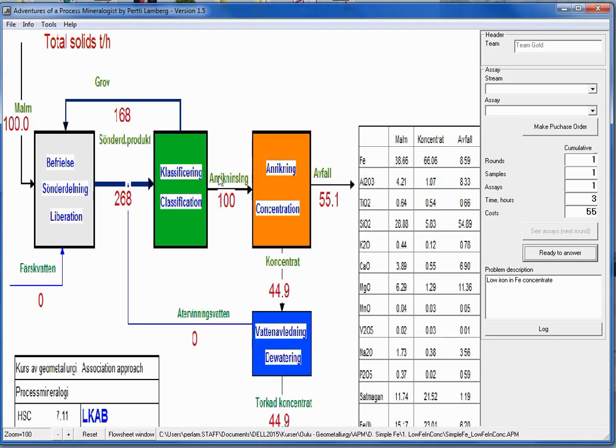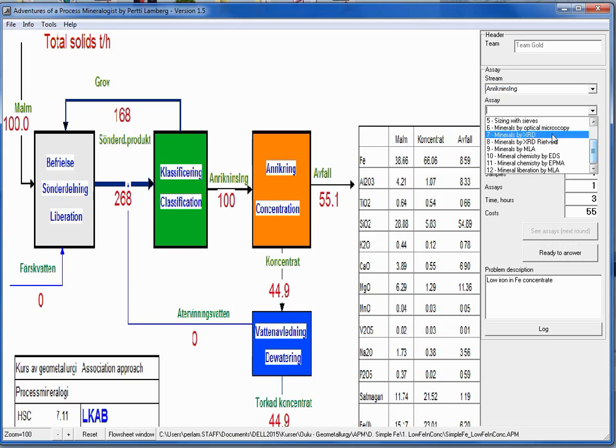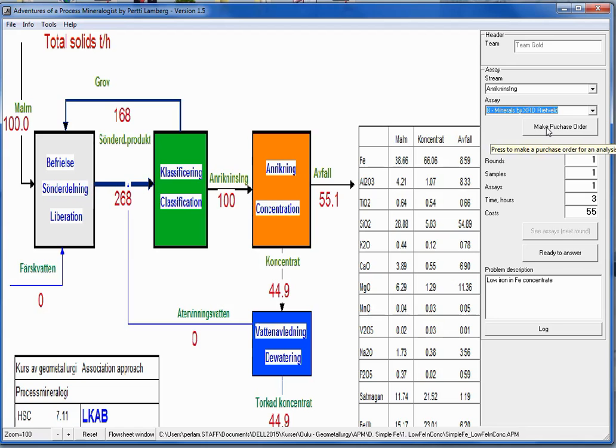Then we consider a possibility that there has been a change in modal composition. There's an iron distribution that is not favorable. So we could take here or here the sample. Let's take Anriknings Ingoende. And we take modal composition. And there are several options: Minerals by optical microscopy, XRD, XRD Rietveld, and modal by MLA. So let's take this Rietveld. And we make a purchase order. And see the assay.